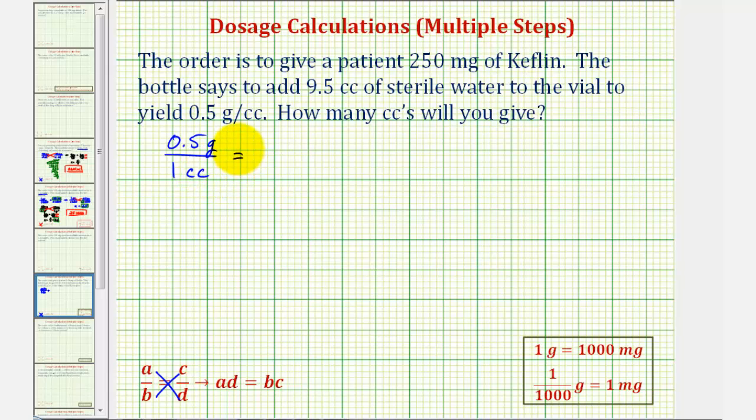Now, for the second rate, we want to give the patient 250 milligrams. So it will be 250 milligrams to an unknown number of cc's. Let's call it x cc's. But we cannot cross multiply and solve for x in this form.